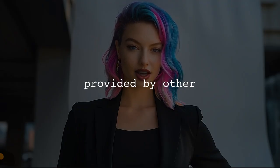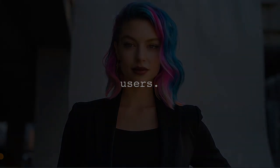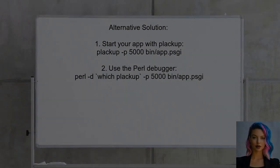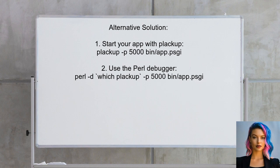An alternative approach to attaching a debugger to your Dancer2 application is to start it using Plackup. You can run the command with the Perl debugger by typing perl -d, followed by the path to Plackup, the port number, and your app's PSGI file.